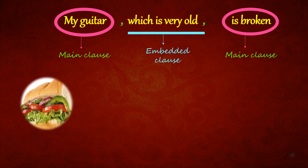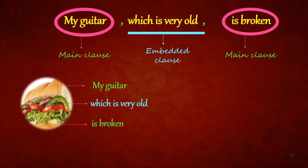Let's equate that to a sandwich example. The upper part of the bun could be called as the main clause. Here, it is my guitar. The stuffing that goes in between is the embedded clause as we have seen. Here, which is very old. And the lower part of the bun is another main clause, and here it is: is broken.